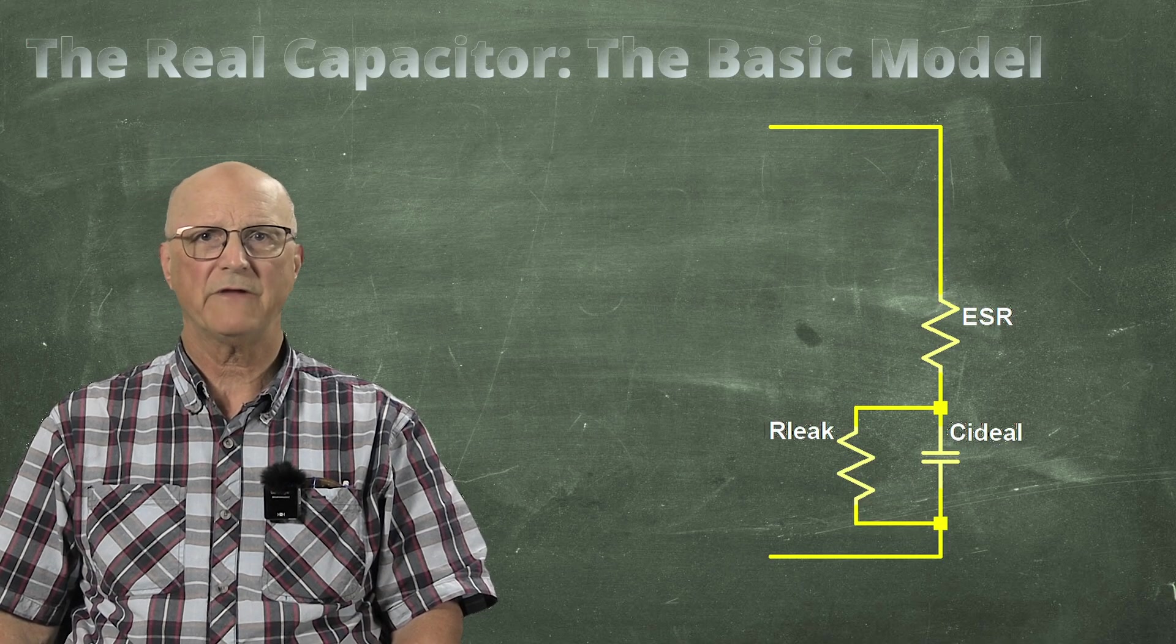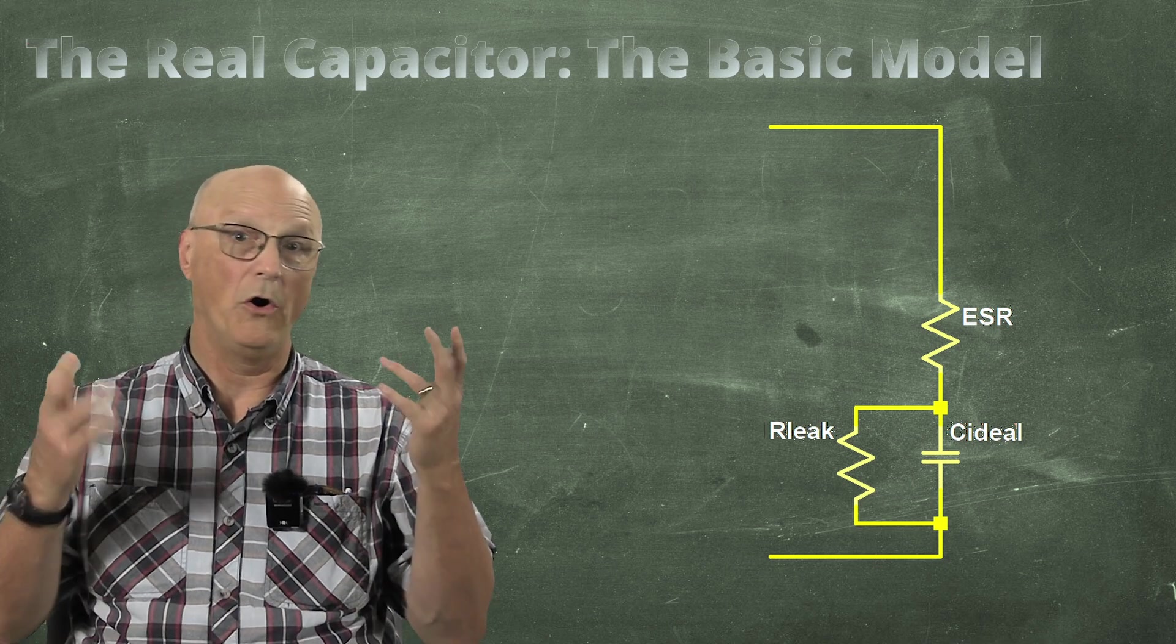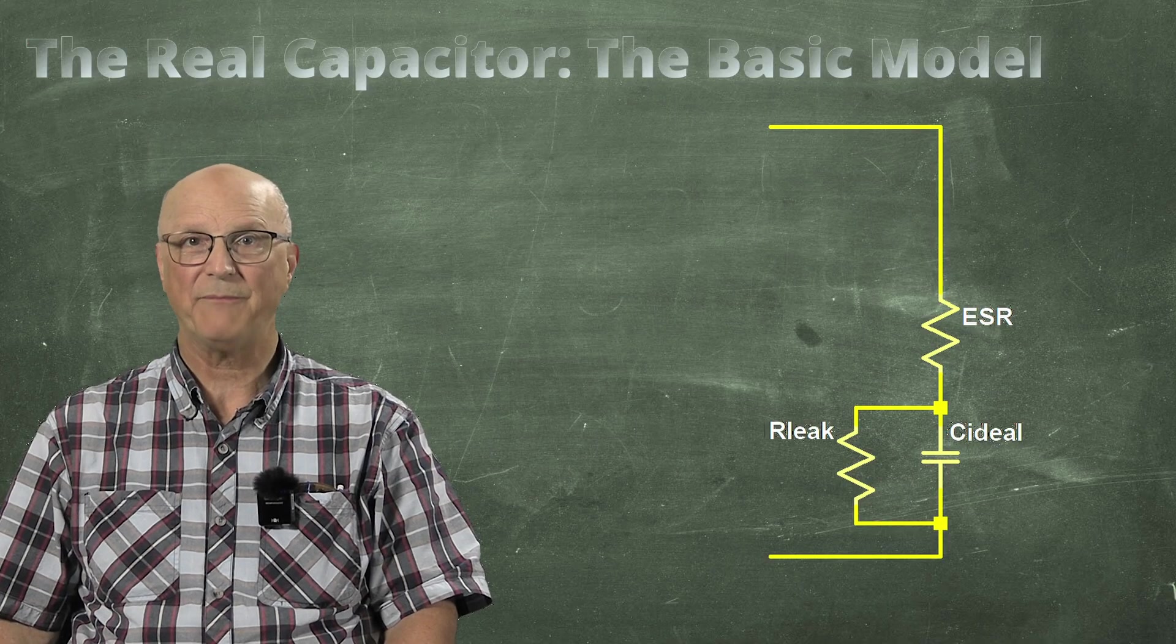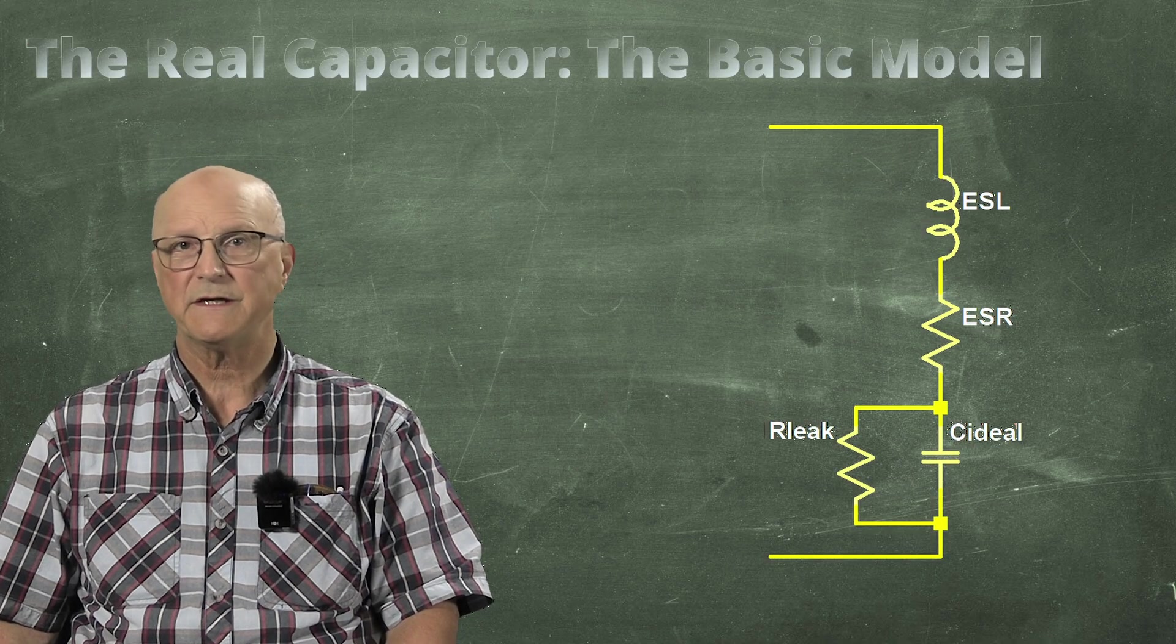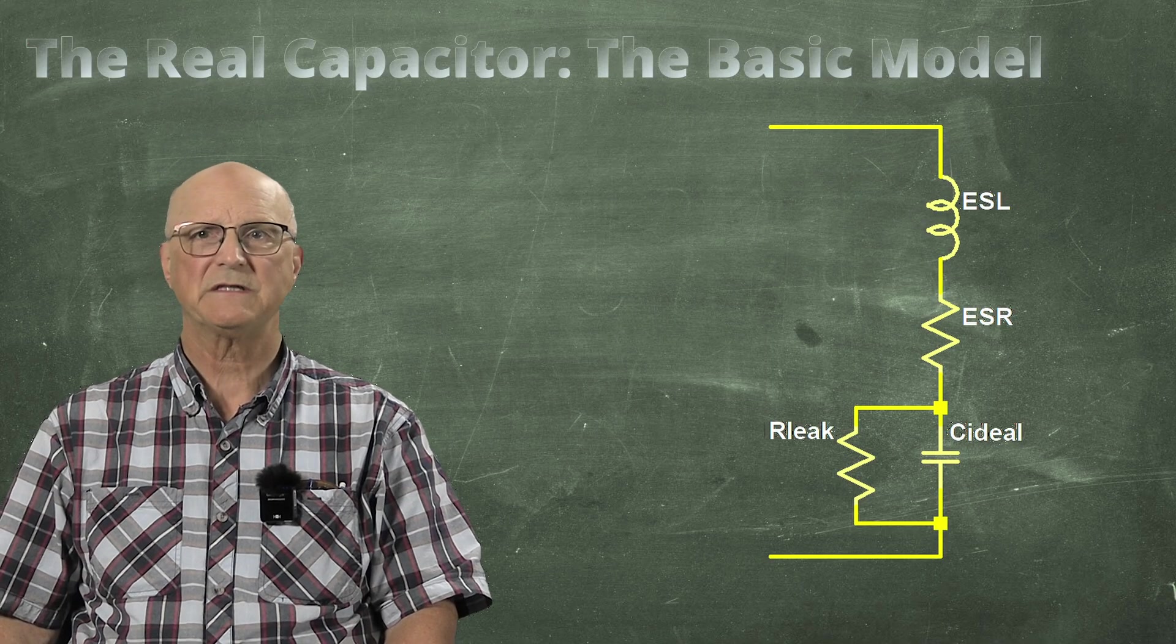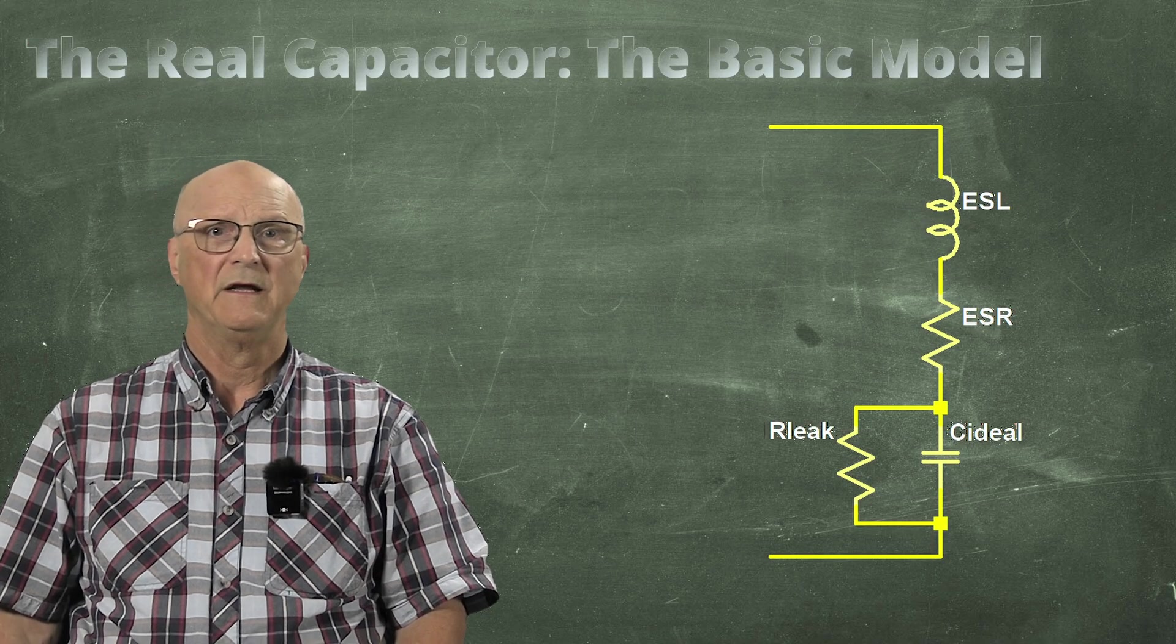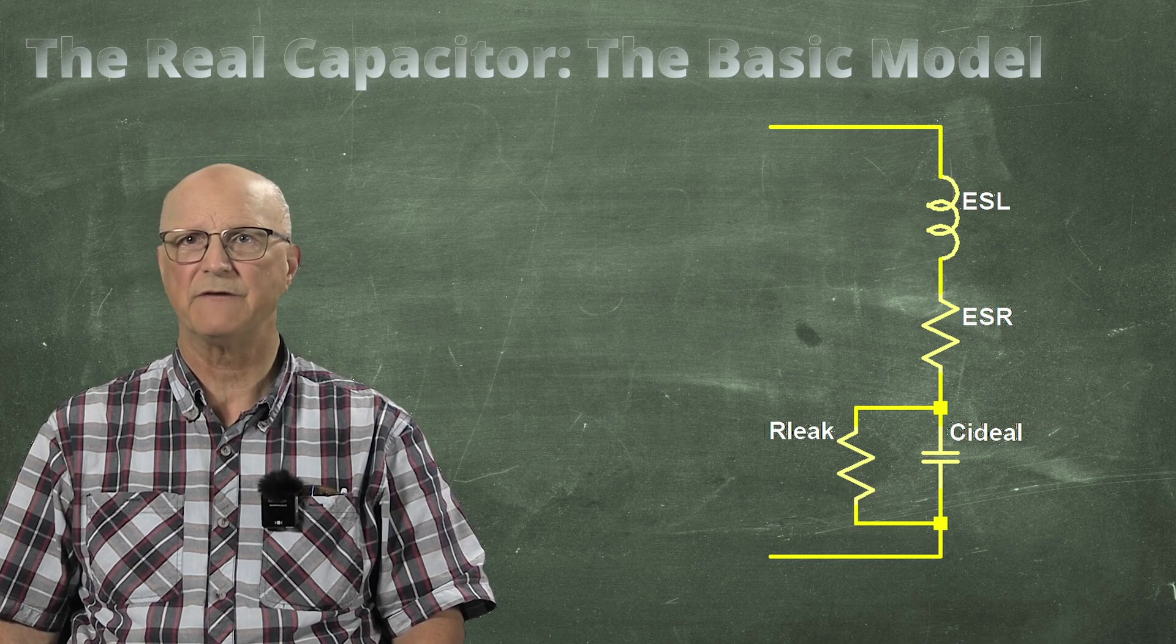Finally, all of the conductors also have some inductance associated with them because all conductors have inductance, no matter how small that might be. This reality is represented by a series inductor in our capacitor model. This is the equivalent series inductance of the capacitor. Unfortunately, this particular aspect of a real capacitor is rarely provided on any datasheet. The presence of this inductance is what causes the self-resonance of a capacitor.